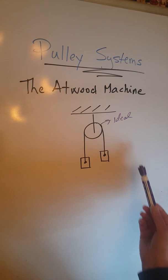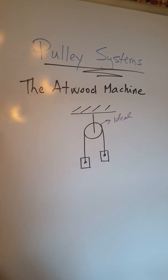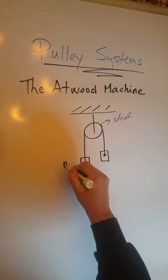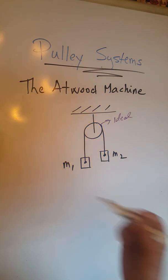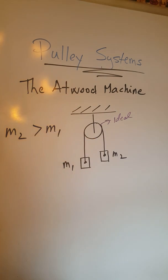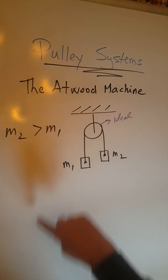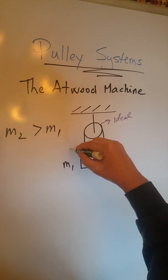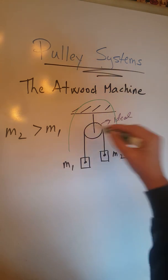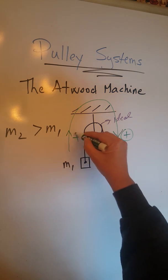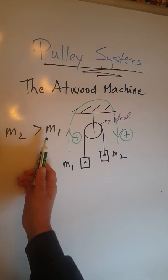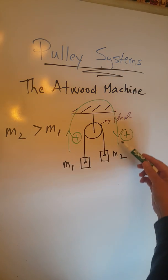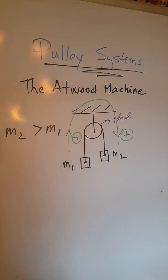We are going to start by looking at a free body diagram of this pulley system with two objects of masses m1 and m2. Let's consider that m2 is greater than m1. If m2 is greater than m1, this entire system will move clockwise, so that must be our positive direction. We must go with a positive direction as given by the condition m2 greater than m1, shown here with a large arrow.